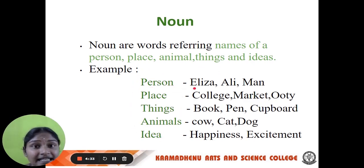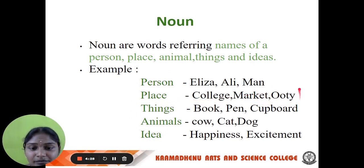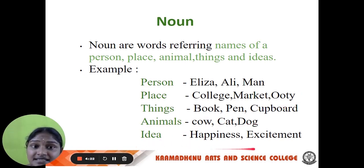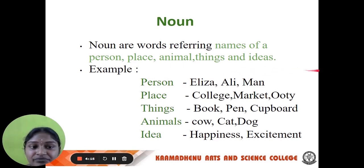For example, a person: Elisa, Ali, Man. For place: College, Ooty, Market. For things: book, bed, cupboard. For animals: cow, cat, dog. For ideas: happiness and excitement. These are the examples for nouns referring names of a person, place, animals and things.